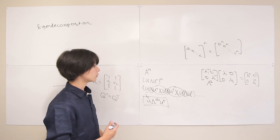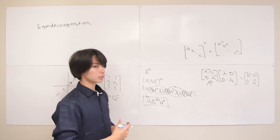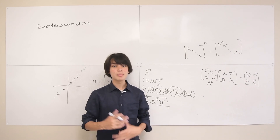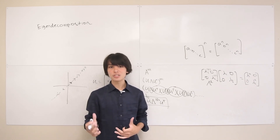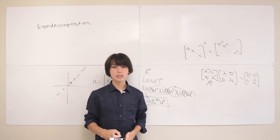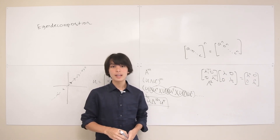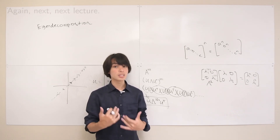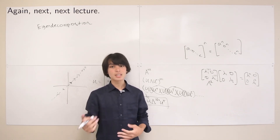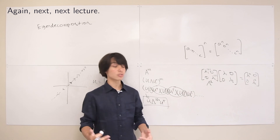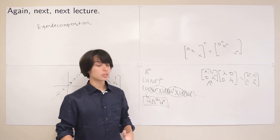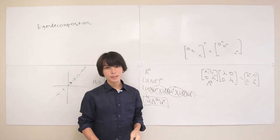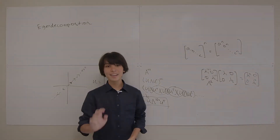That's just one of many examples where eigendecomposition comes in handy. That's all for this lecture on eigendecomposition. In the next lecture we'll talk about singular value decomposition, which is essentially a general case of eigendecomposition that works even when matrix A is non-square.